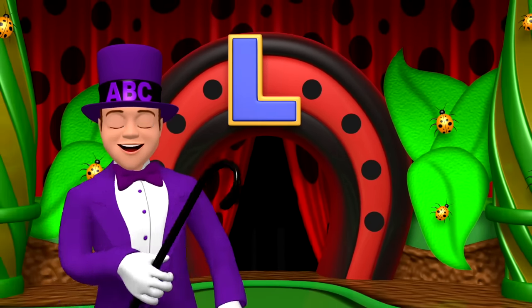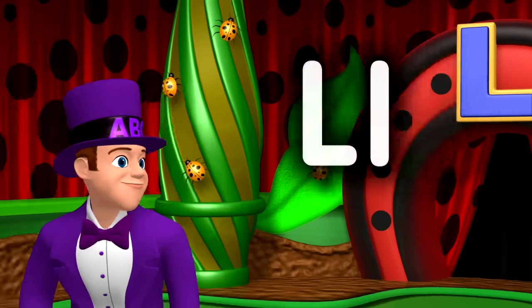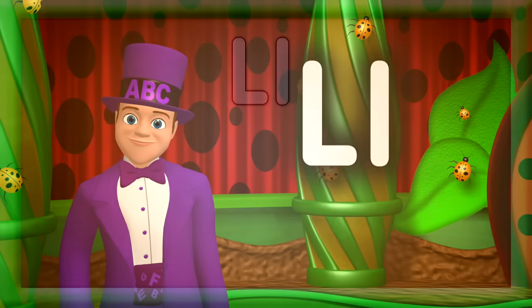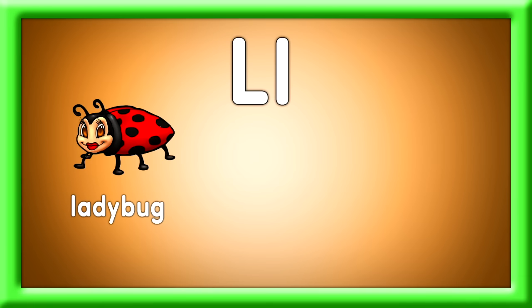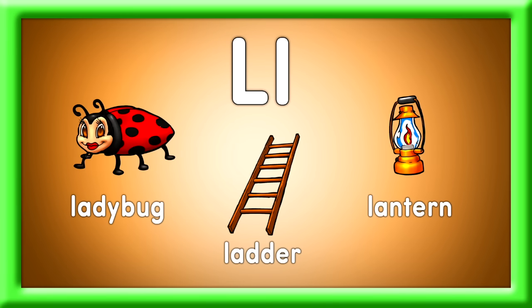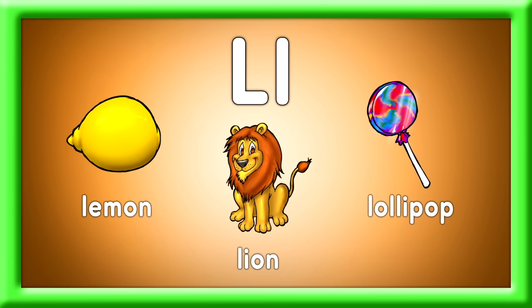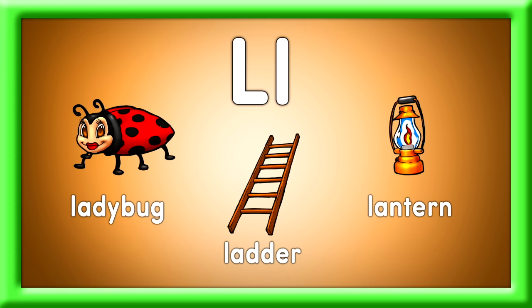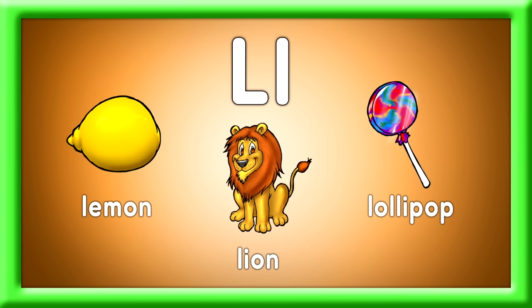Let's learn letters like never before. See the capital L and the lowercase l? Here are L words for us to learn. Ladybug, ladder, and lantern. Sing L words, then jump and hop. Lemon, lion, lollipop. Ladybug, ladder, and lantern. Sing L words, then jump and hop. Lemon, lion, lollipop.